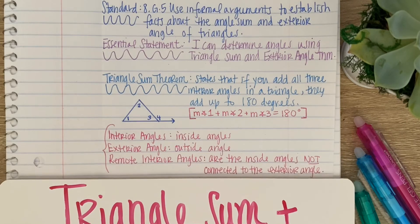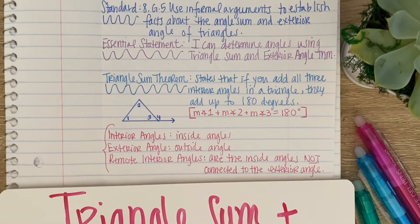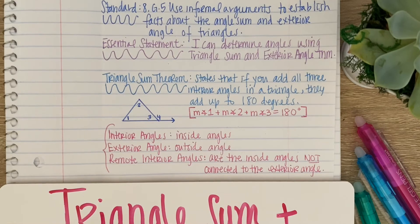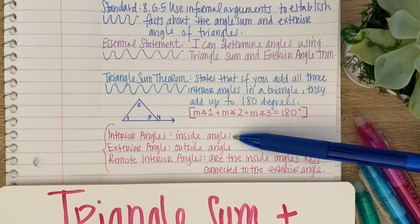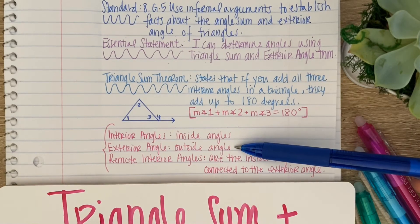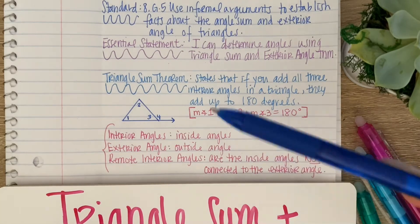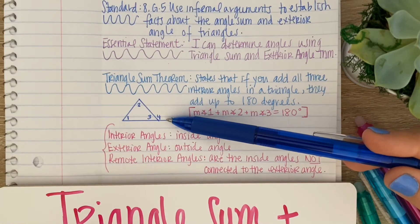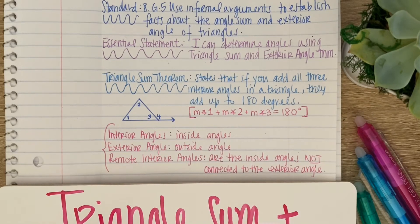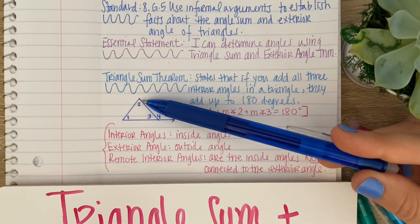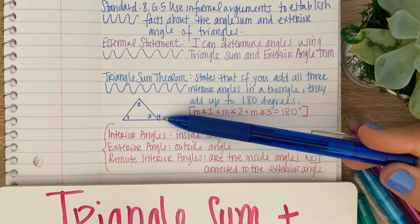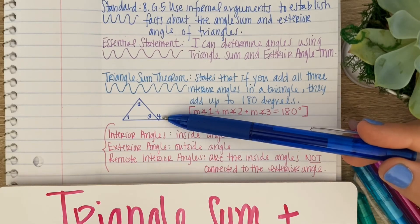A couple of vocabulary words you should know. The first is interior angles — that just means the angles inside the triangle. The exterior angle is the outside angle, usually referred to as angle four here. And the remote interior angles are the inside angles that are not connected to the exterior angle. Looking at this diagram, our remote interior angles would be one and two, because they are opposite the exterior angle four and not connected to it.